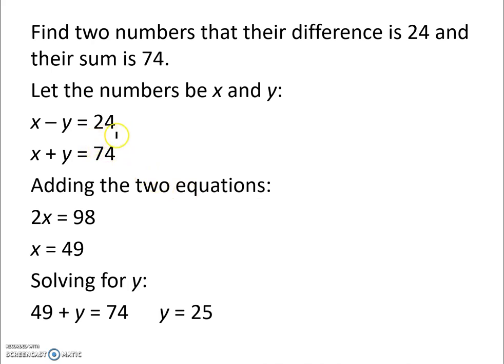We'll let the numbers be x and y. x minus y is 24, that's the difference. x plus y equals 74, that's their sum. Adding these two equations, we find x and x is 2x, negative y plus y is zero, so the y's go away, 24 plus 74 is 98.